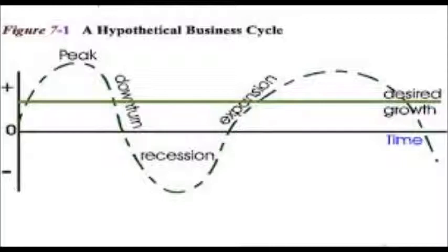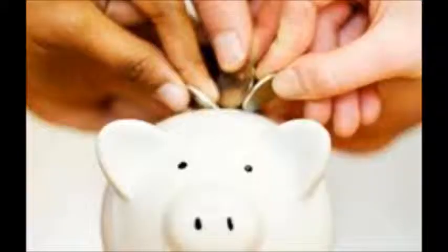Expansion is the period of economic growth — the rise of real GDP. The peak is when GDP stops rising and the height of the economic expansion has been reached. Contraction follows the peak; it is the economic decline with fallen real GDP. Recession is prolonged and may even reach depression. Trough is the lowest point of economic decline — when real GDP stops falling.